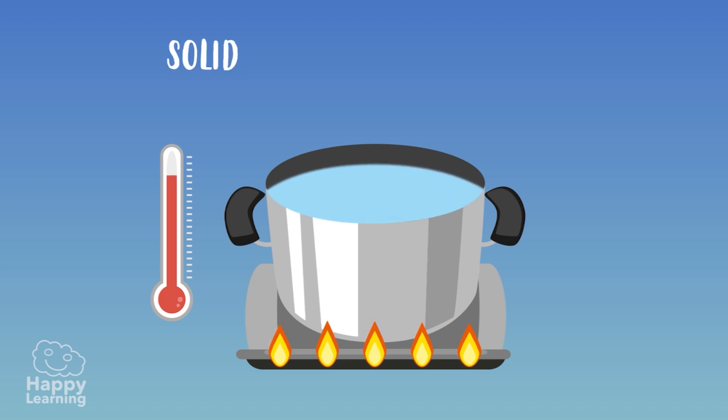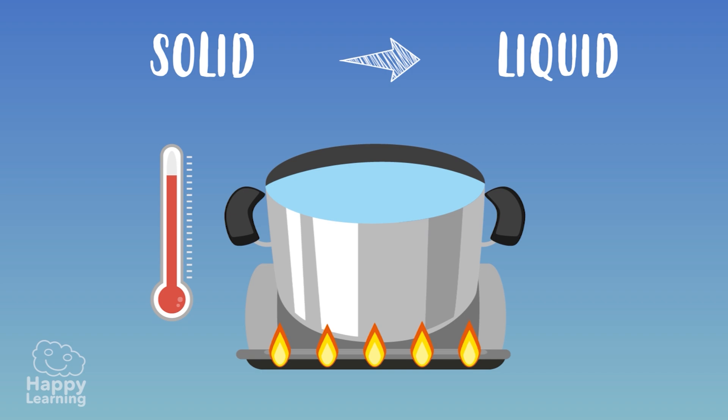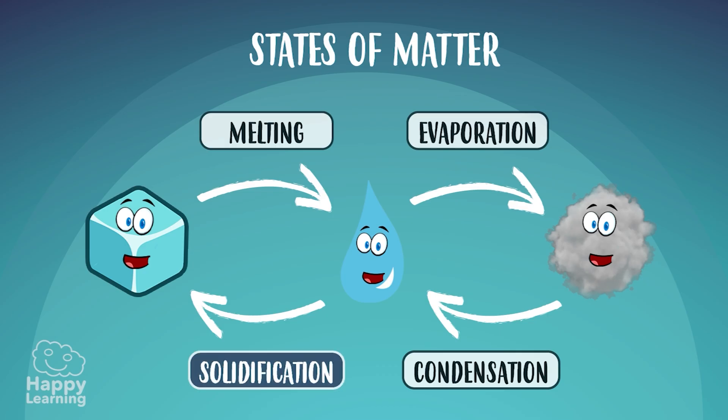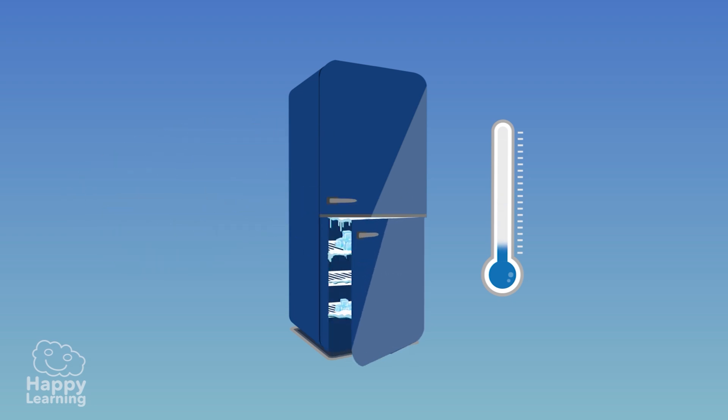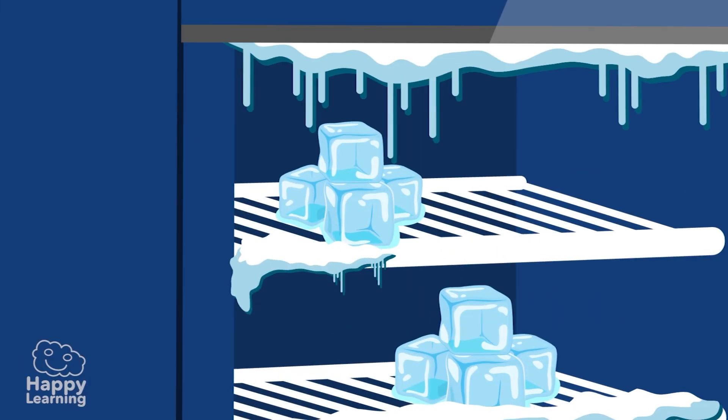it melts and changes from solid to liquid. Solidification is the opposite from melting. Matter changes from liquid to solid form. It happens when we put water in the freezer and it turns into ice. It goes from liquid to solid.